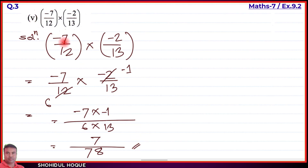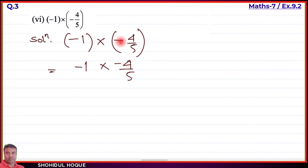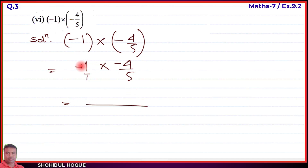Part number 6: minus 1 into minus 4 by 5. Writing it as minus 1 into minus 4 by 5. Minus into minus gives plus. So numerator: 1 times 4 is 4; denominator: 1 times 5 is 5. Answer is 4 by 5.